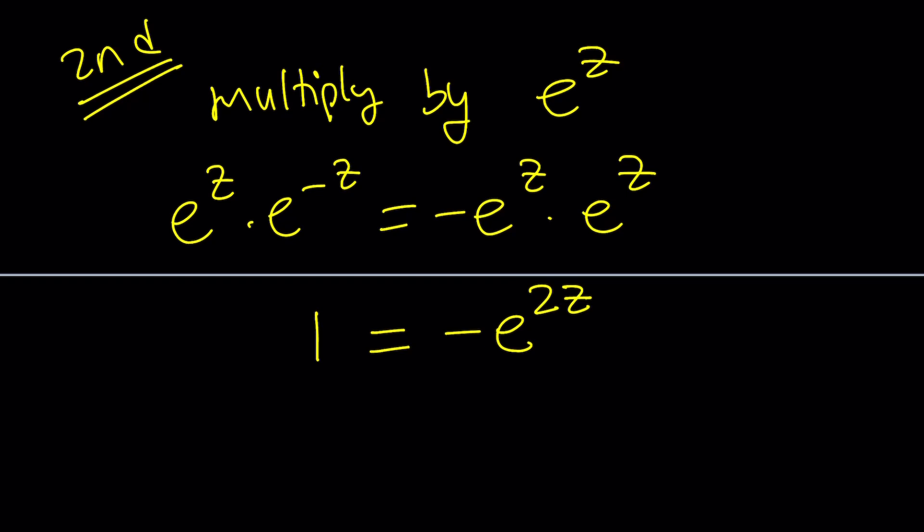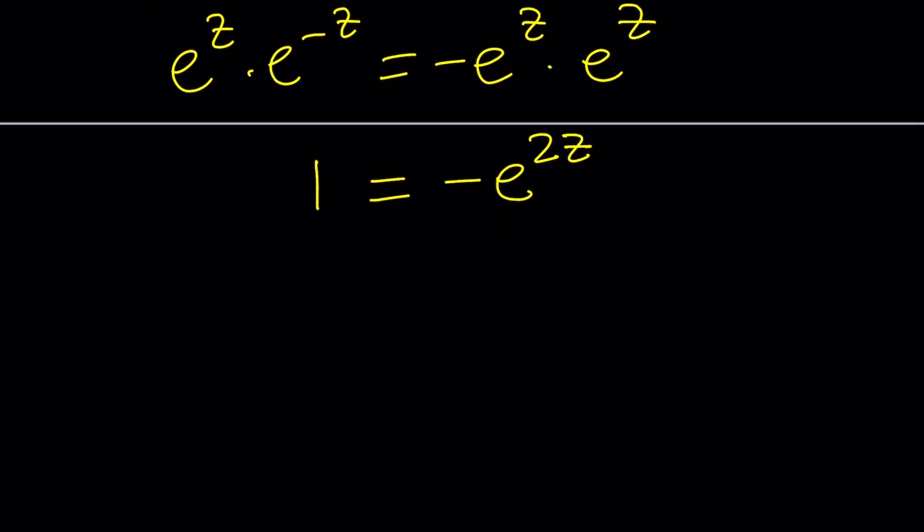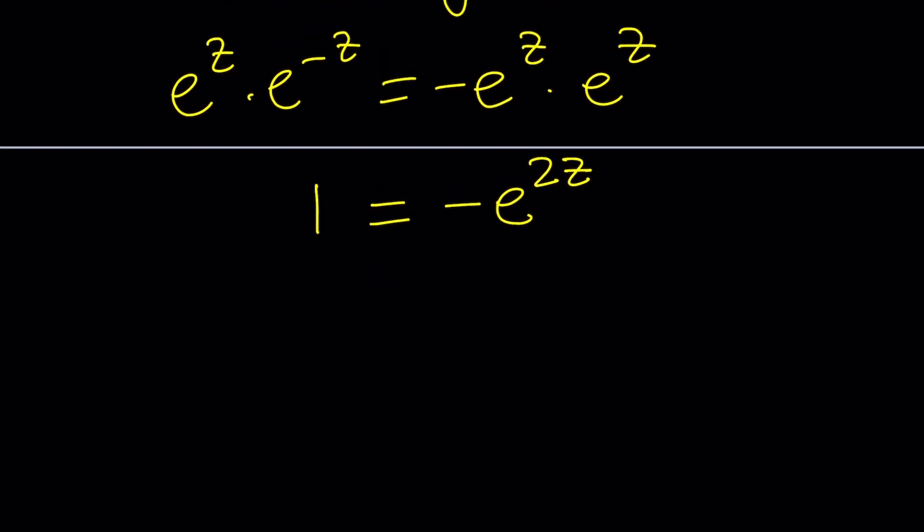Now, what is that supposed to mean? We got a negative in front of the e to the two z, and that is equal to a number. Let's go ahead and get rid of that negative. Multiply both sides by negative one, or some people would divide. Same thing. So, and switch sides, and we get e to the power of two z, or not two z again, equals negative one.